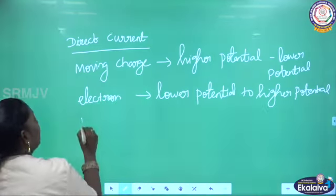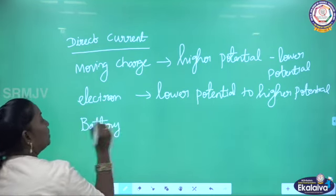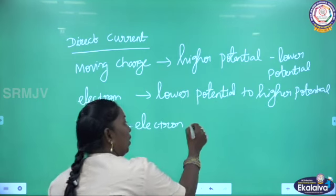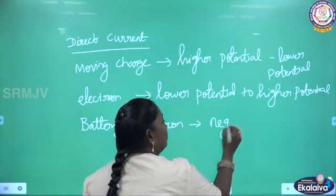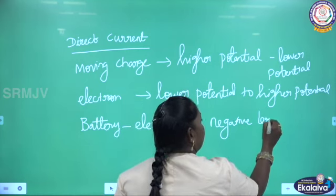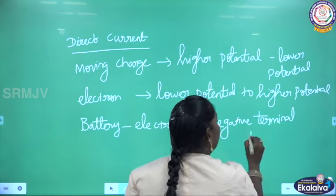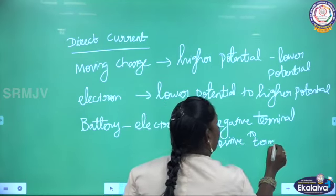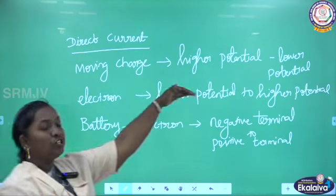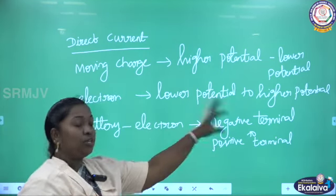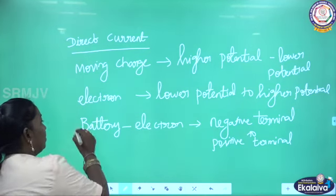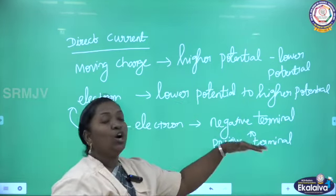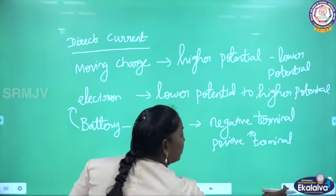If you take a battery as a source, the electrons inside the battery will move from the negative terminal to the positive terminal. So when you take a charge, it flows higher to lower potential, while electrons move from lower to higher potential — that is, from the negative terminal to the positive terminal.